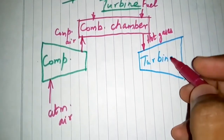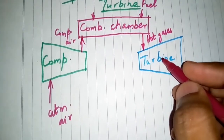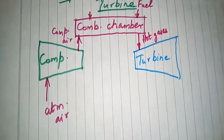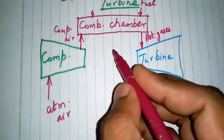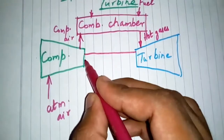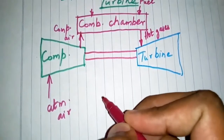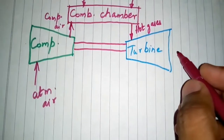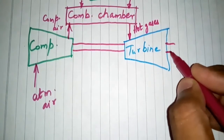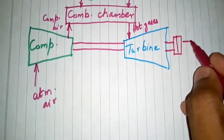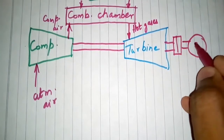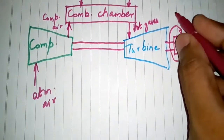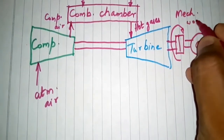The hot gases strike the turbine rotor, making it rotate. The kinetic energy is converted into mechanical energy, thus producing work at the turbine shaft. Some part of the work is utilized for running the compressor, and the remaining is used to generate electric power in the generator.